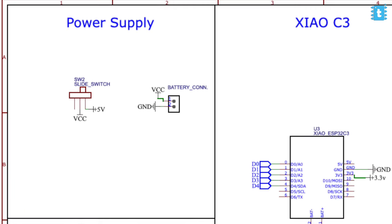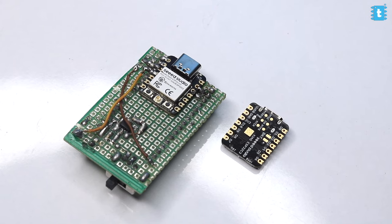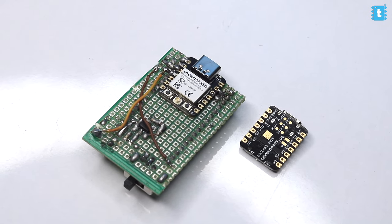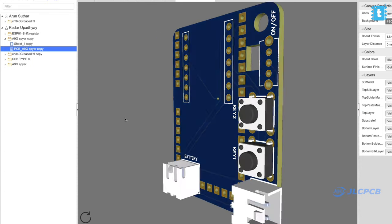If you observe the schematic properly, you'll notice that this time we haven't used any voltage regulator in the circuit. That's because we provided the battery connection directly to the battery terminal of both boards. Previously, we made this project on a general-purpose PCB, and providing the battery connection directly to the Shao C3 board required attaching the battery at the bottom side where the terminals are, which was very difficult. Since we decided to go for a custom-designed PCB, we removed the voltage regulator and soldered the Shao C3 board directly on the PCB.